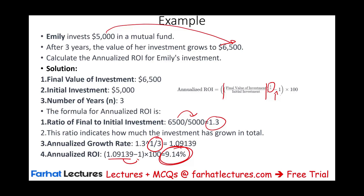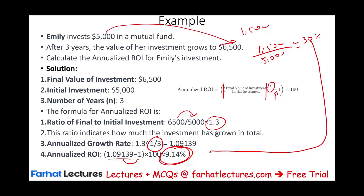Without annualizing, Emily's profit is $1,500 divided by $5,000, which gives a basic ROI of 30%. But if you assume that 30% is per year, that's totally different from the actual 9.14% she's really earning annually. You must annualize the return to make proper comparisons — otherwise the time dimension is ignored.